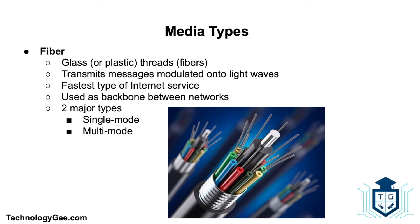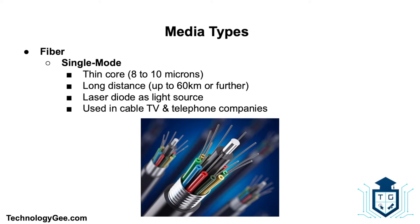Next we have fiber optics — the technology that uses glass or plastic threads to transmit data. A fiber optic cable consists of a bundle of glass threads, each capable of transmitting messages modulated onto light waves. Fiber optics is the fastest type of internet service, primarily used as a backbone between networks. Fiber optic cabling comes in two major types: single-mode and multi-mode.